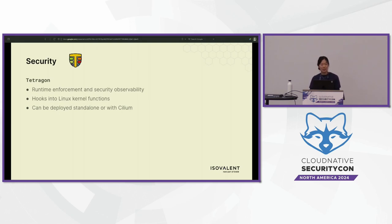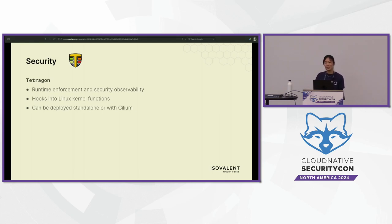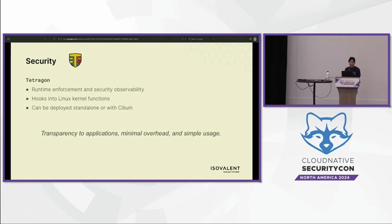Tetragon can be deployed with Cilium or without — something not a lot of people are familiar with. If you don't have a Kubernetes cluster but still want to leverage Tetragon — for example, to kill a process immediately if someone edits a specific file — you can do that without a Kubernetes cluster and without installing Cilium. It allows for transparency to applications, is pretty minimal so it doesn't take a lot to stand up, and is quite simple to use.